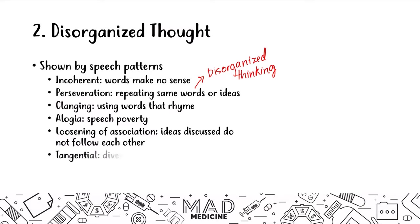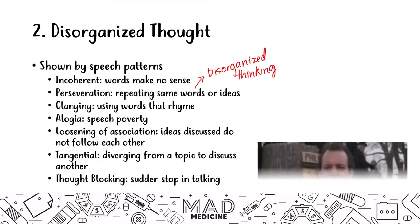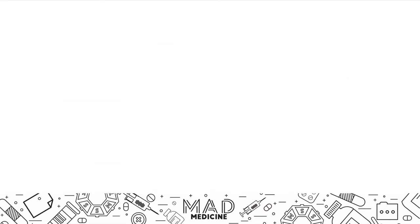Patients can also have tangential thinking, where they diverge from one topic and discuss another one altogether. An example: 'Yesterday we were working out, and while I was working out, I just wanted to tell you that I ate some random food and my stomach has been hurting, and the book I read yesterday made no sense because it was saying that Martin Luther King Jr. was a horrible man, but he was amazing.' In tangential thinking, they talk about one topic and before they finish their train of thought, they move on to the next. Finally, there's also thought blocking, in which a patient suddenly stops mid-sentence.